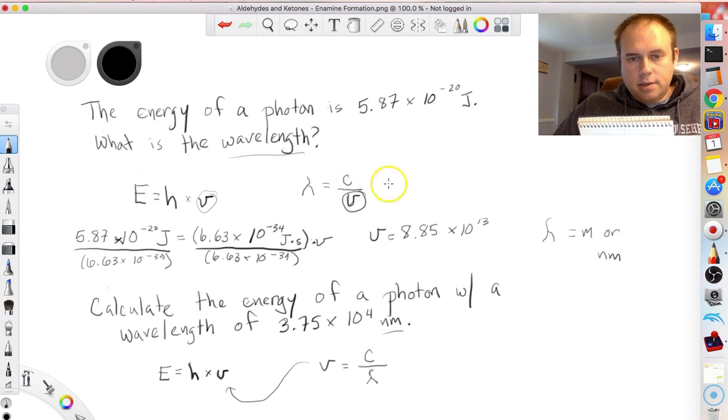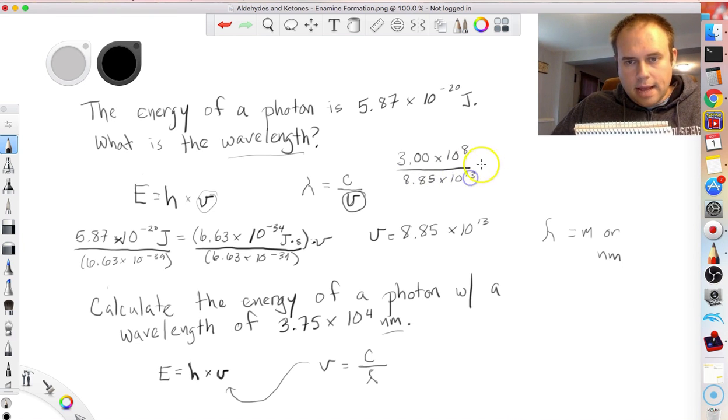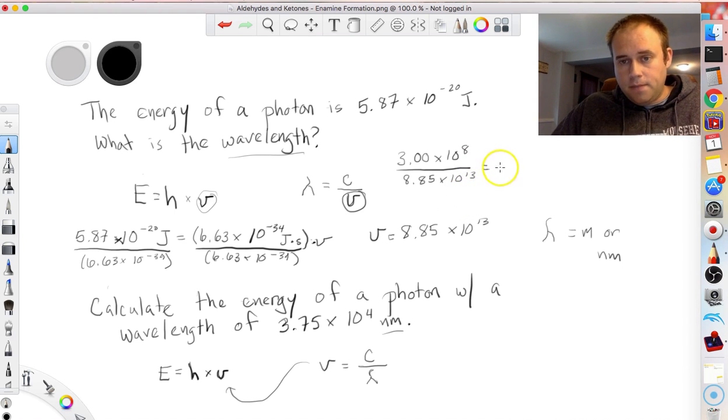Well, we know the speed of light, so now we can figure out using the speed of light 3.00 times 10 to the 8th over 8.85 times 10 to the 13th. That should give me the wavelength in meters. So keep in mind if you wanted nanometers, it would be different. So this comes out to 3.39 times 10 to the minus 6. 10 to the minus 6 meters. So that's the wavelength. You could have stopped there.